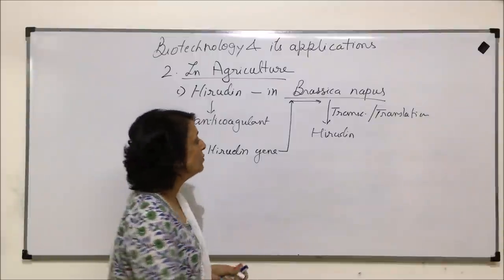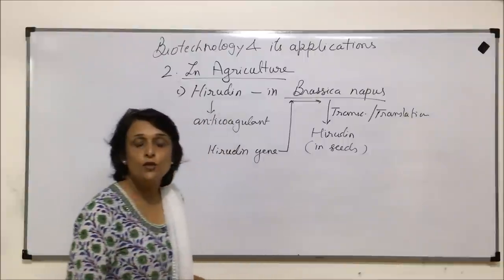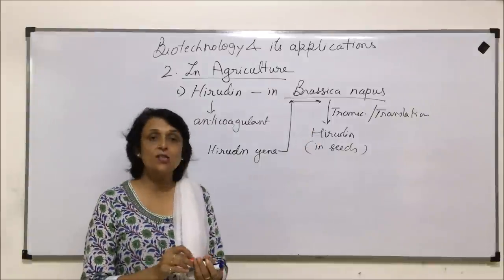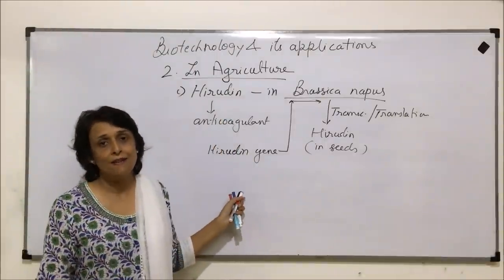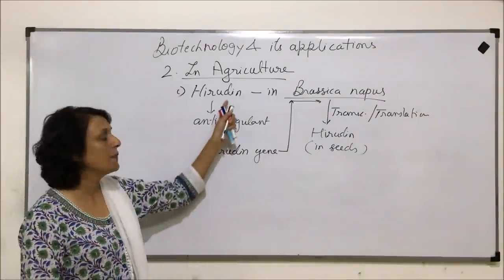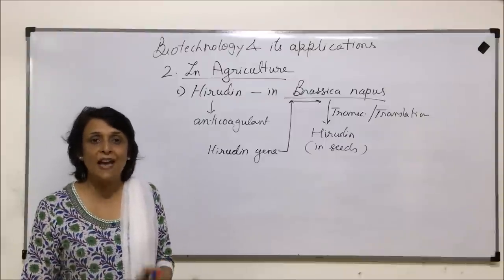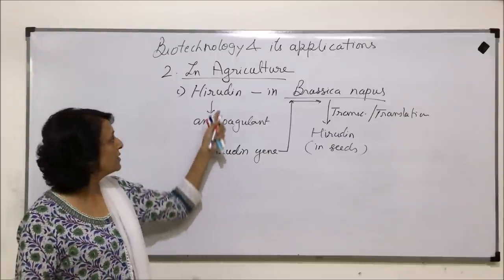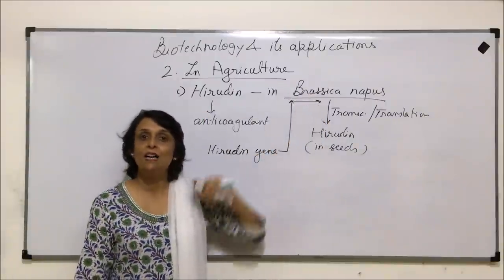This hirudin accumulates in the seeds of this plant. From the seeds, when we extract oil, that oil contains hirudin. We isolate that hirudin from the oil and use it to preserve blood for a longer period without coagulation. We can use other things like heparin, which is the natural anticoagulant we have, but getting heparin is an expensive process. This is a cheaper method — we are getting hirudin synthesized by a plant.